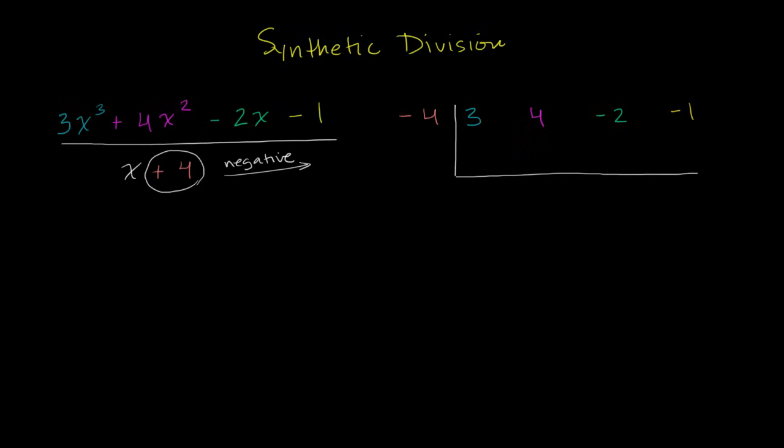And it's going to seem like voodoo. In future videos, we'll explain why this works. So first, this first coefficient, we literally just bring it straight down. And so you put the 3 there. Then you multiply what you have here times the negative 4. 3 times negative 4 is negative 12. Then you add the 4 to the negative 12. 4 plus negative 12 is negative 8.